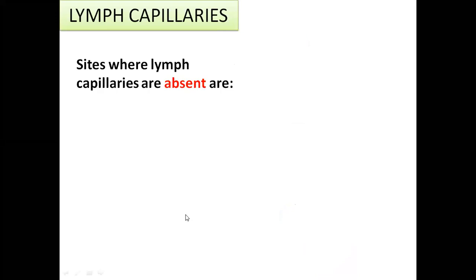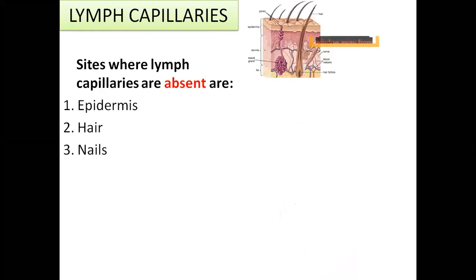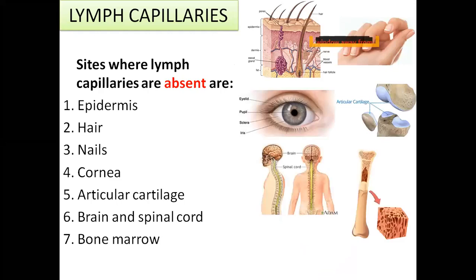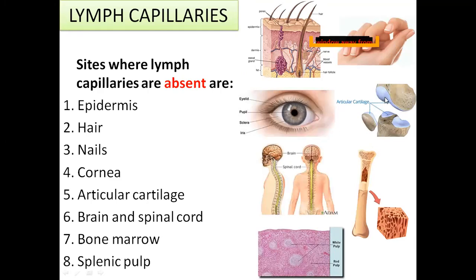Lymph capillaries are absent in several sites: they are absent in the epidermis, in hair and nails, in the cornea, in articular cartilage lining the bone, in the brain and spinal cord, in the bone marrow, and also in the splenic pulp.